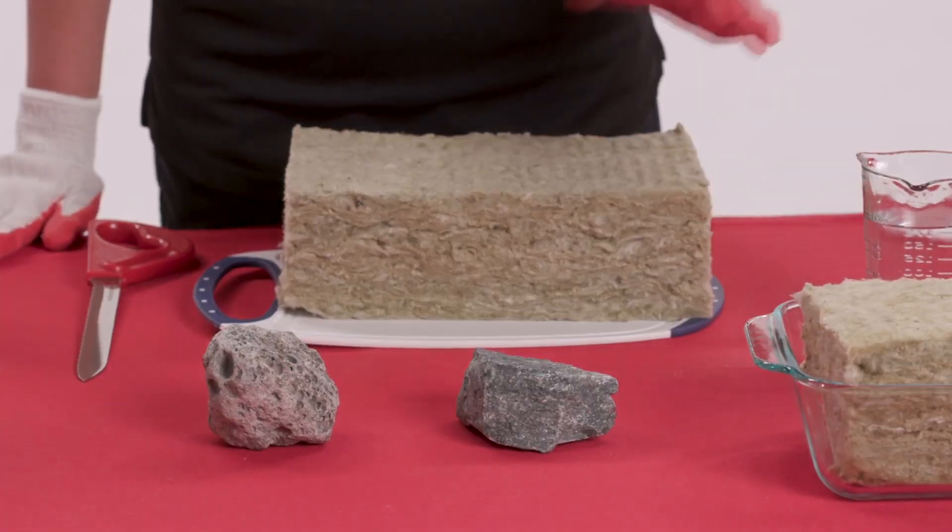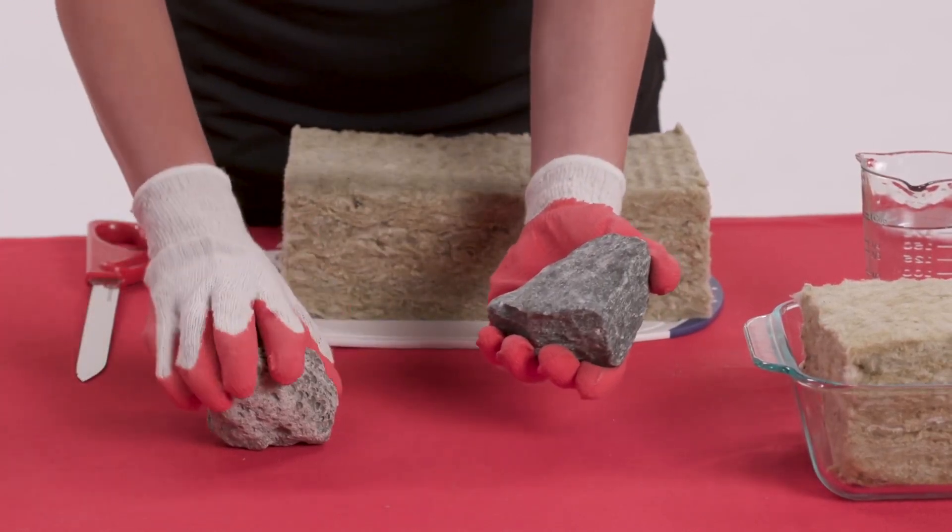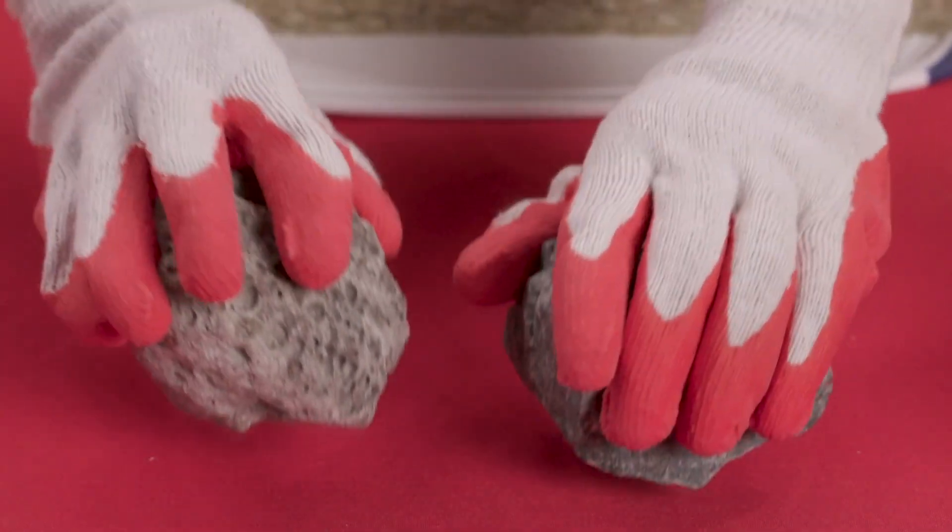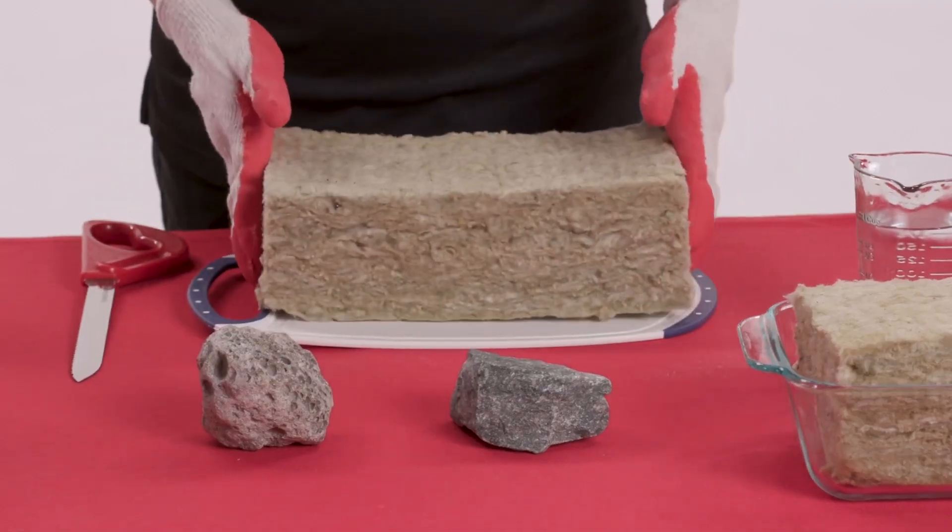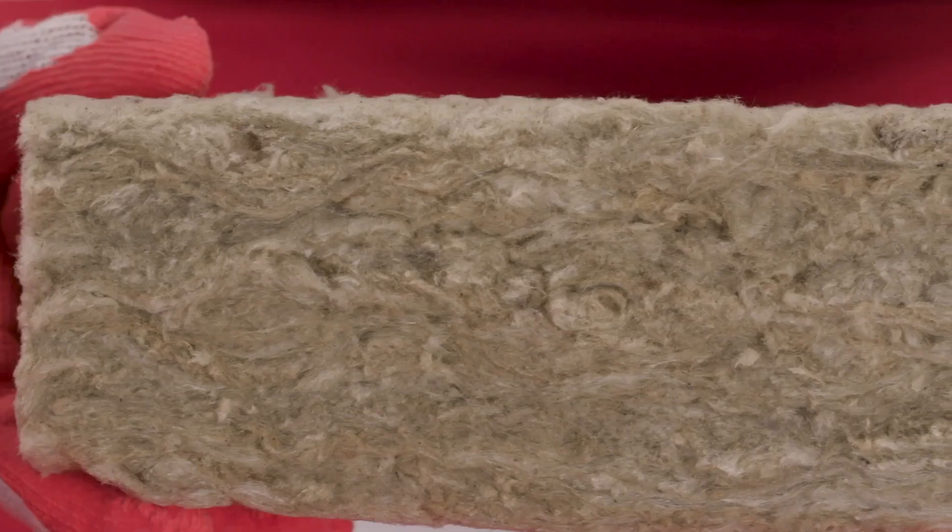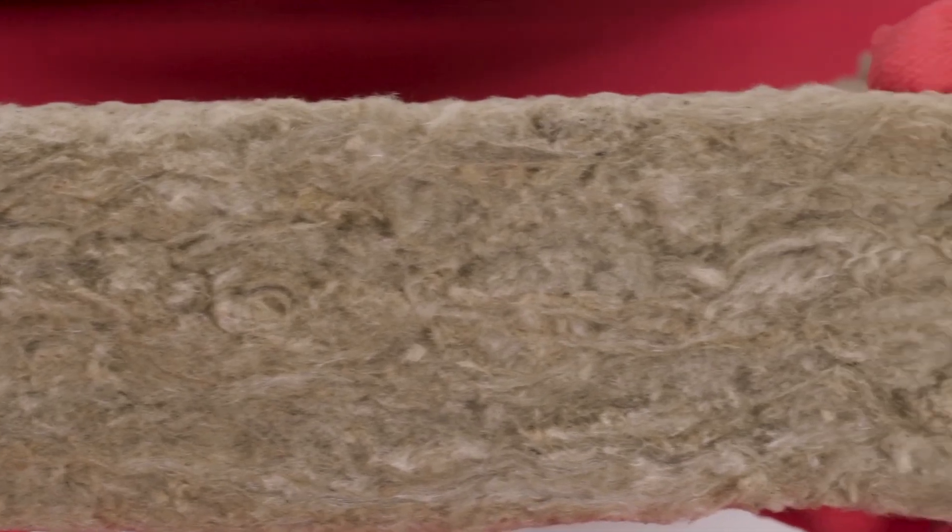Rockwool stonewool insulation is primarily made from basalt or volcanic rock and some steel slag, a byproduct of steel production. From these simple ingredients, Rockwool makes stonewool batts and boards that form the basis of many unique insulation products homeowners and contractors use in their projects to stay safe and comfortable.